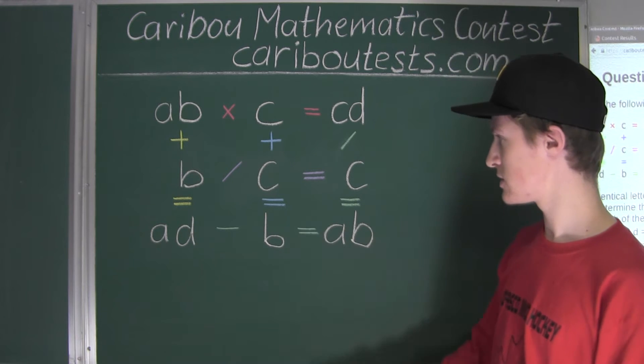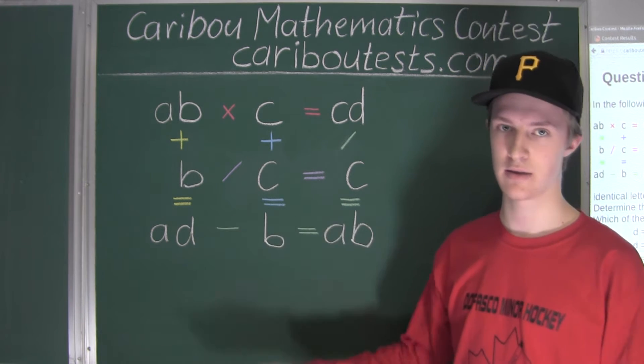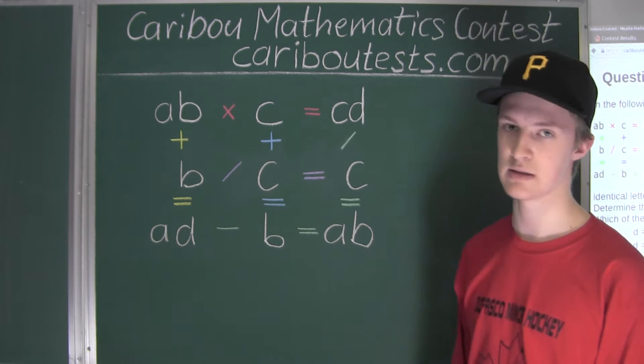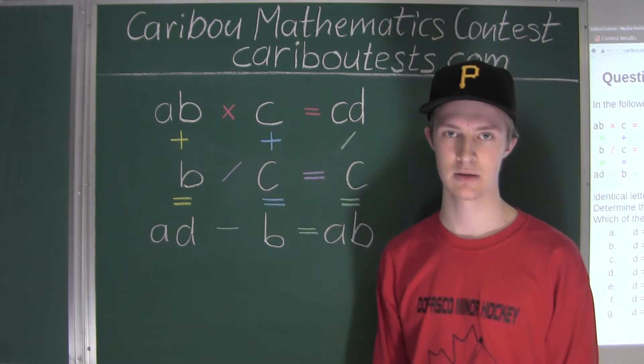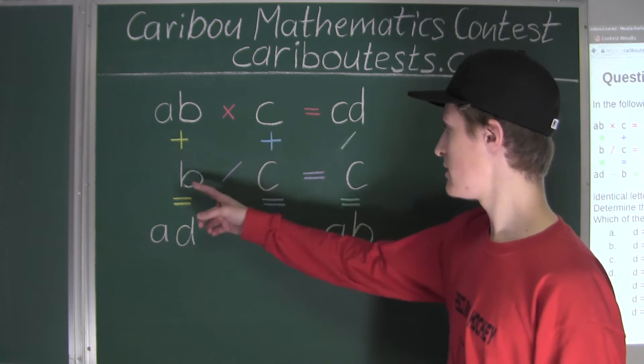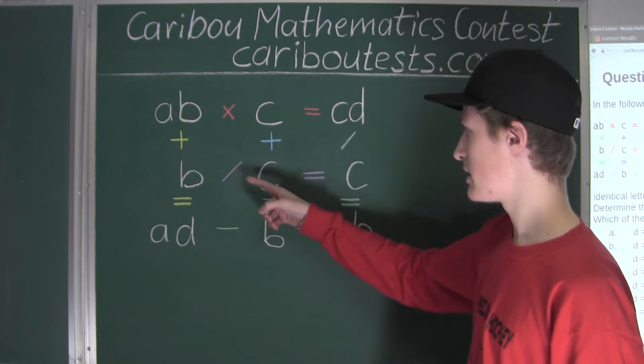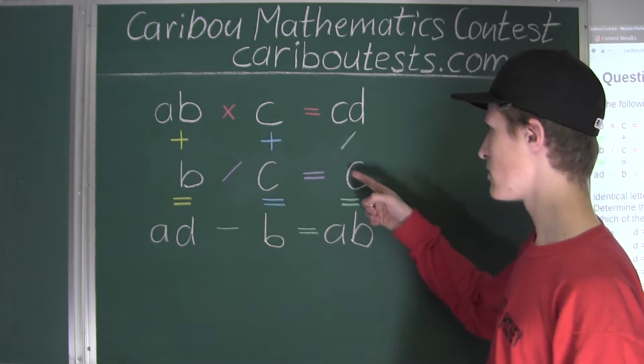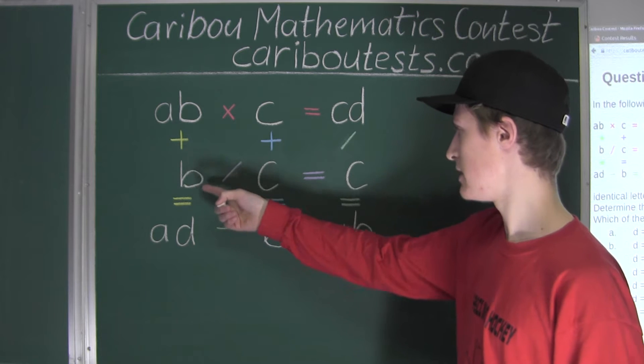Well, since we are just starting out, we don't really know anything, so we must look for equations with the least unknowns, or the least different letters. Well, here in this equation, B divided by C is equal to C, well there's only two unknowns, B and C.